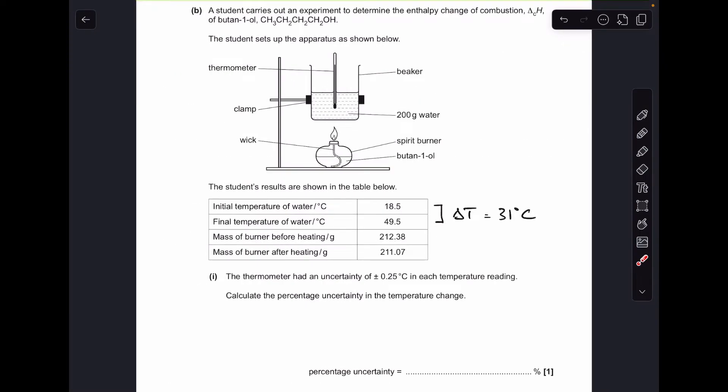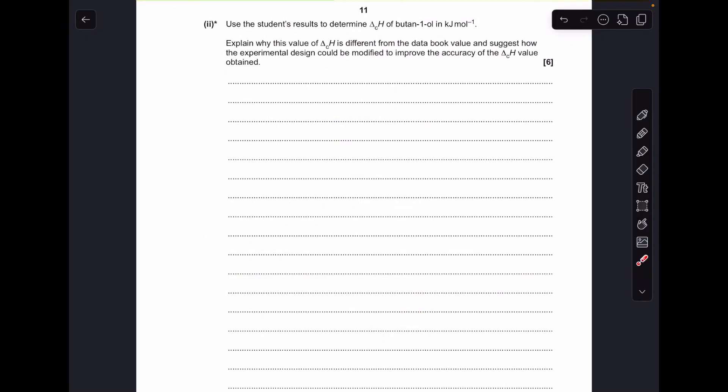Moving on to part B, we've got to calculate the percentage uncertainty in the temperature change, which I've already worked out. The difference between those two numbers is 31 degrees C. So the percentage uncertainty is that uncertainty value divided by what's being measured, multiplied by 100 to get it into a percentage. But because there's two temperature readings in the change, we double the uncertainty. So the answer is 1.61%.